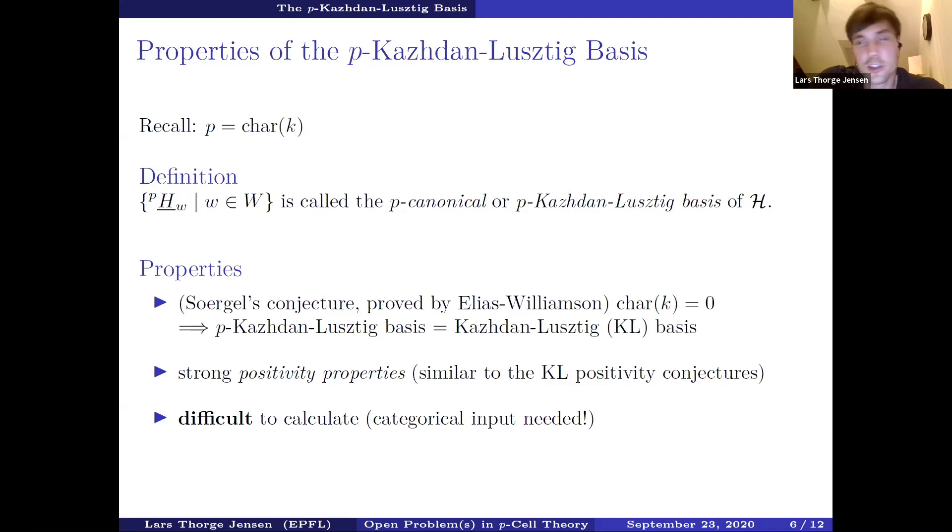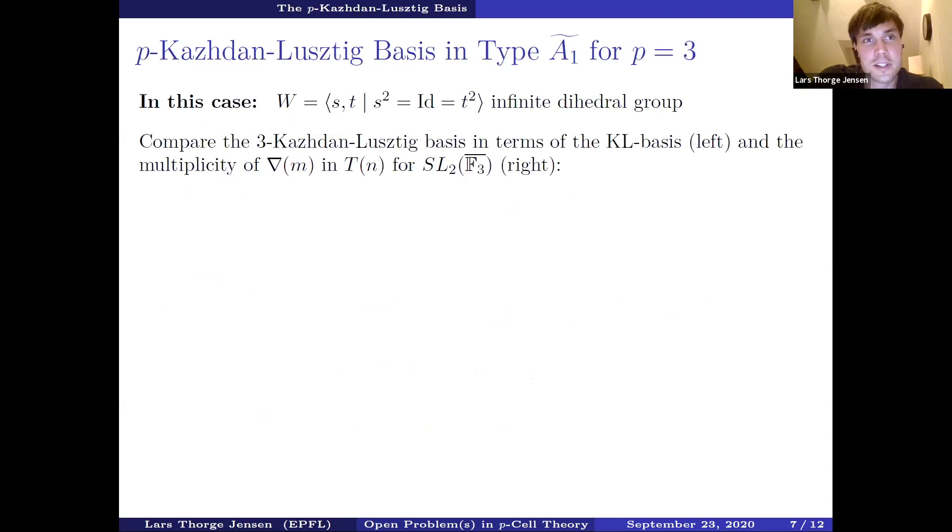The last thing I want to mention is that this basis is very difficult to calculate. For the Kazhdan-Lusztig basis, there is a combinatorial way to calculate it and no categorical input is needed, but here we really need categorical input. My main research interests actually focus around or revolve around this basis. I'm also interested in how to efficiently calculate it using, find efficient algorithms for a computer. I'm interested in studying the combinatorics, the underlying combinatorics of this basis. And just try to understand as much as possible about the basis.